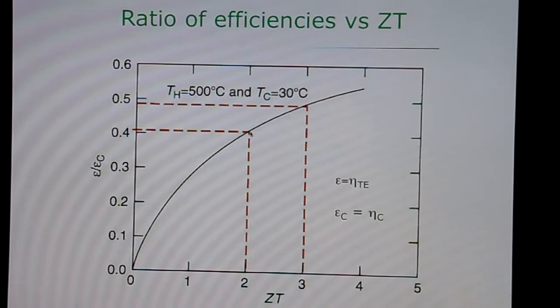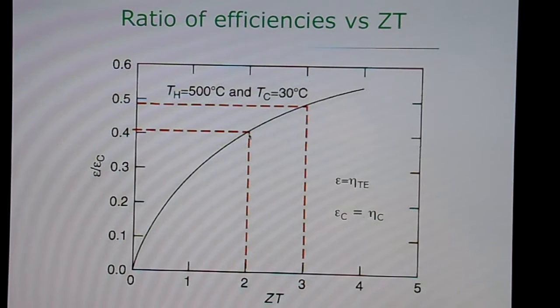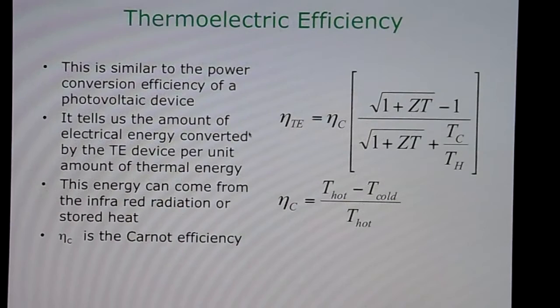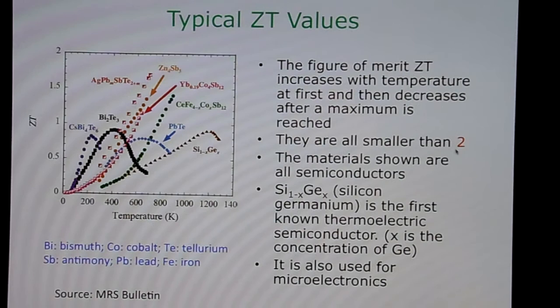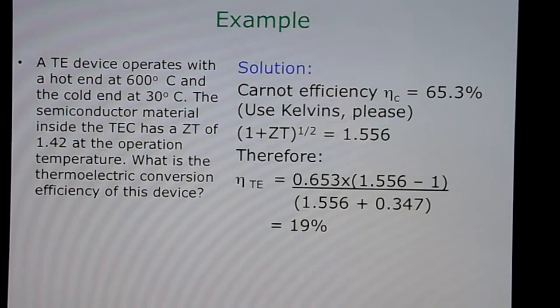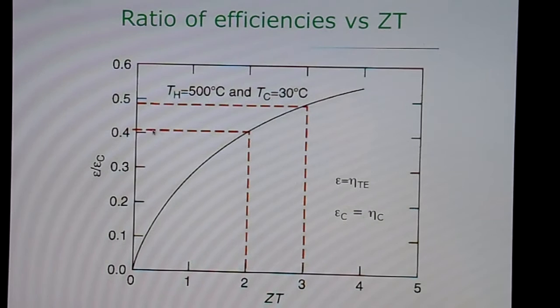We highlight two particular points on this graph. For ZT equals 2, the ratio of efficiencies is slightly above 0.4. This point is highlighted because, as mentioned earlier, the ZT values of all thermoelectric materials known today are less than 2, giving a ratio of efficiencies just above 0.4.